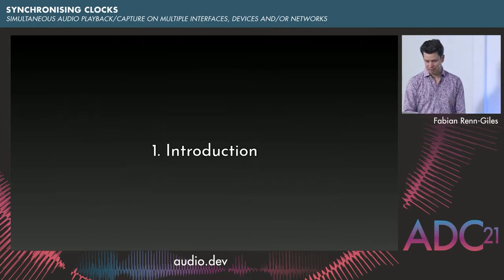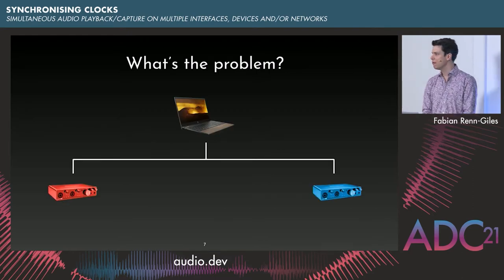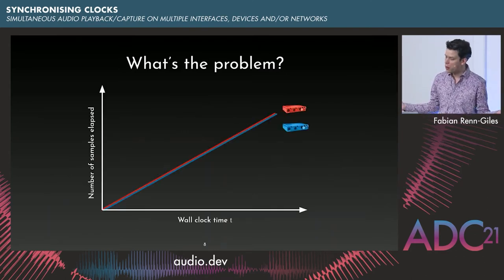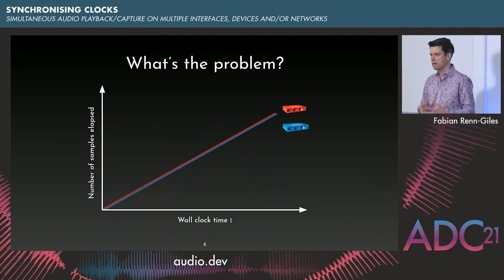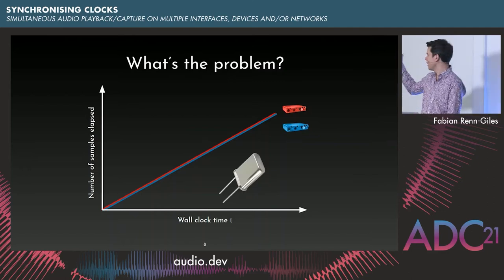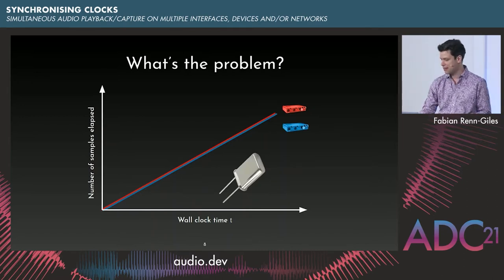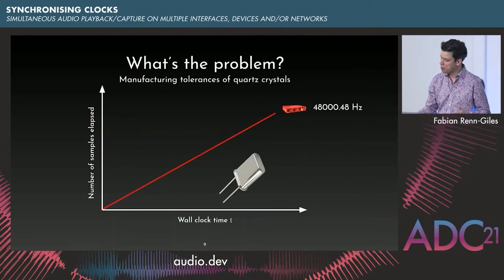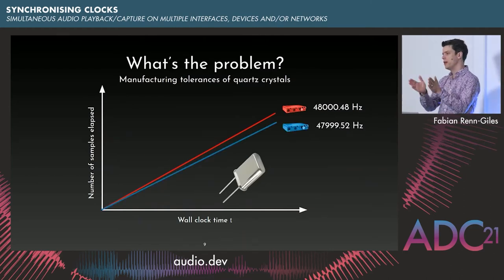So what's the problem? If I have two audio interfaces connected to a laptop, won't they just play in sync? Or put another way, won't the number of elapsed samples of both audio interfaces be the same for any given moment in time? Well, it's not going to be, because there's something like a quartz crystal inside each of these audio interfaces and they won't be cut exactly the same way. So although the nominal sample rate is 48 kHz, the actual sample rate might be slightly different, and the audio between both interfaces will slowly drift apart over time.